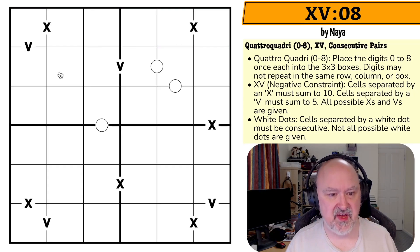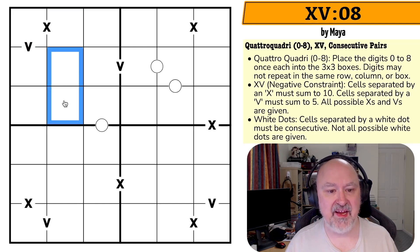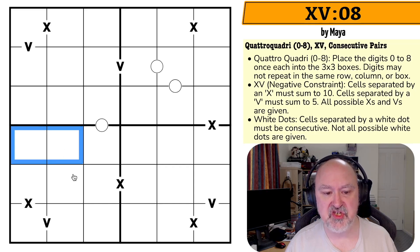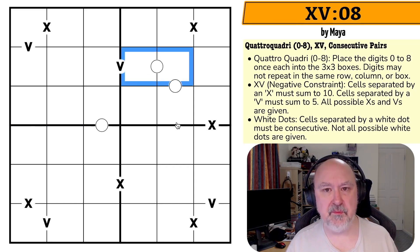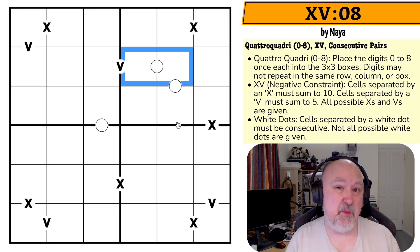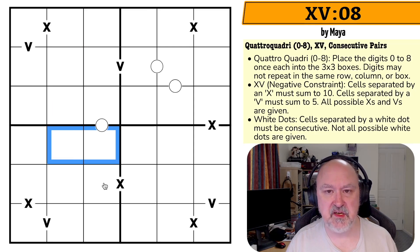On top of that, we're using the XV constraint — not XV pairs, XV — and we'll be using the consecutive pairs or white dot constraint. XV means that cells separated by an X must sum to 10, cells separated by a V must sum to five, and all X's and V's are given. So if you can make a domino on the grid, they may not sum to either five or 10. White dots mean cells separated by a white dot must be consecutive, or have a difference of one. Those are the white dot pairs — they can exist elsewhere.